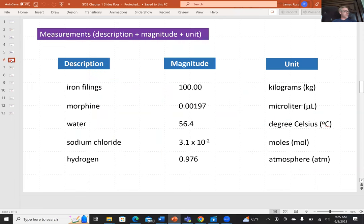Measurements. Typically, when we give measurements, we want to give three pieces of information. We want to describe the object. So for example, iron filings. We want to give the magnitude of the object. So here I've got 100.00. And then I have to specify the unit of the magnitude. So in this case, kilogram. So looking at these three pieces of information for iron filings, I've got 100.00 kilograms of iron filings. Morphine. I've got 0.00197 microliter of morphine. Final example, but you can infer the other two. I've got 56.4 degrees Celsius of water. So these are the three pieces of information you want whenever you take a measurement.